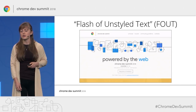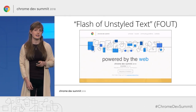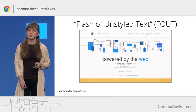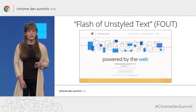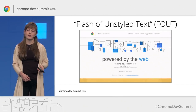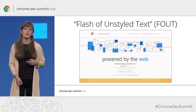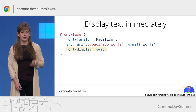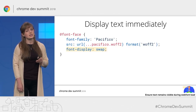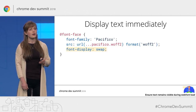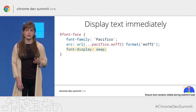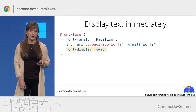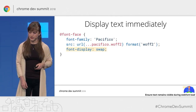What you want to incur instead is the flash of unstyled text. This is when the browser initially displays text using a system font and then swaps it out for the custom font once it has arrived. The good news here is that this fix is literally a one-liner. Everywhere in your CSS where you declare a font face, add the line font-display swap. This tells the browser to use that swapping behavior that I just talked about in the previous slide.